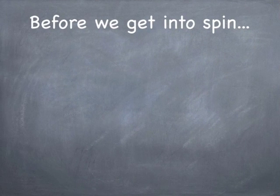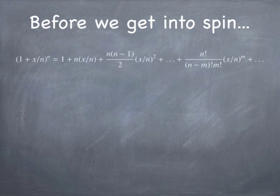But before we get into spin, I want to do a little math. I want you to look at this binomial expansion of (1 + x/n) to the power n. If you expand that out, you'll notice that an interesting thing happens. n factorial divided by (n minus m) factorial is just n times (n-1) times (n-2) down to (n - m + 1) — so it's m terms.